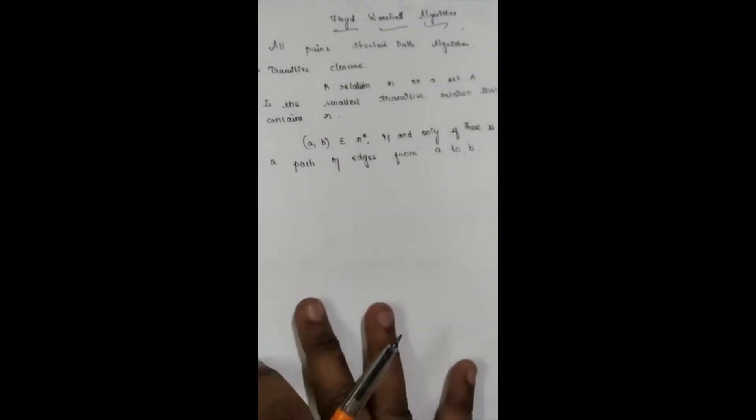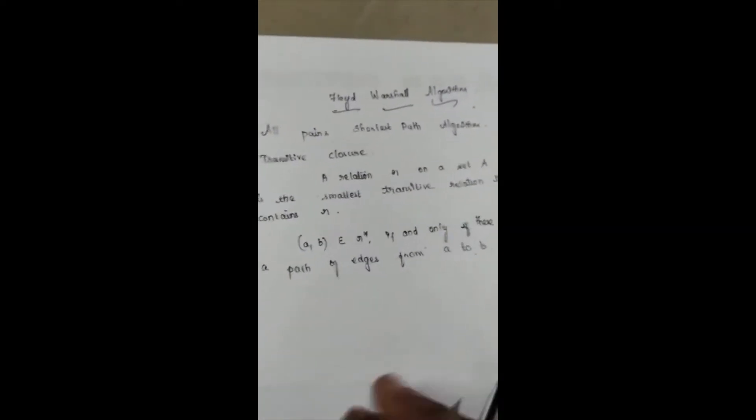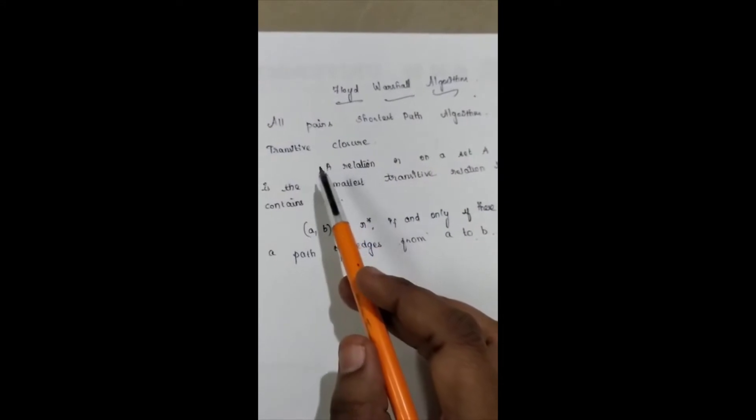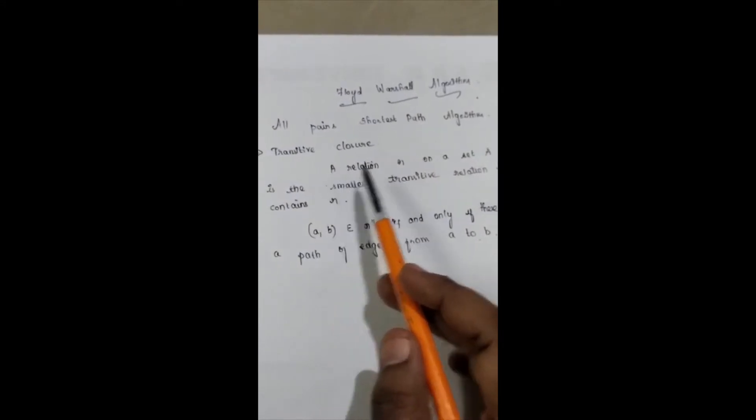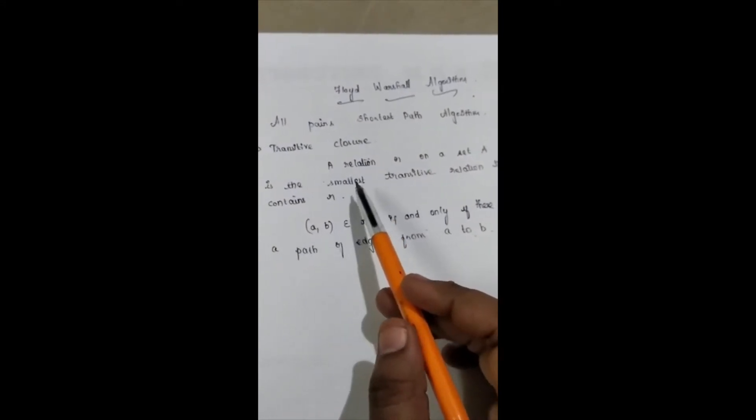In this video we are going to see how to find all-pairs shortest path in a graph using the Floyd-Warshall algorithm. This algorithm is also known as the all-pairs shortest path algorithm and it is used to find the transitive closure for a graph.